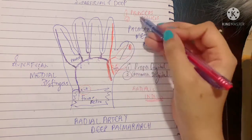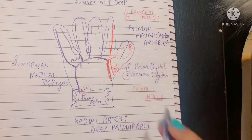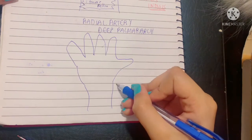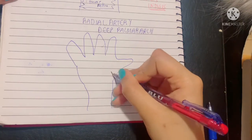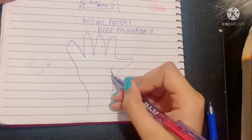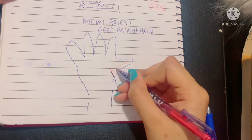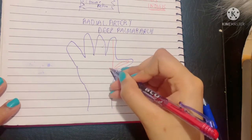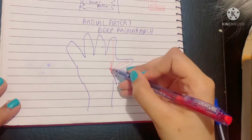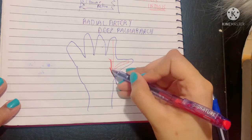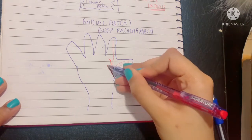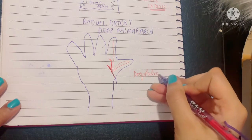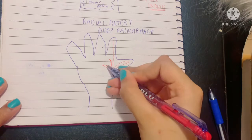The thumb is supplied by the princeps pollicis and the lateral index finger by the radialis indicis. After giving these two branches, the story of the deep palmar arch begins. The radial artery gives off a superficial branch to complete the superficial palmar arch, and itself continues as the deep palmar branch, which is the radial artery's termination, forming the deep palmar arch.